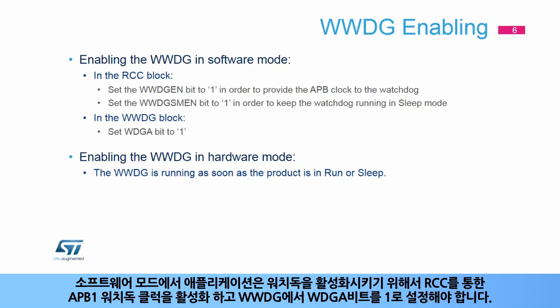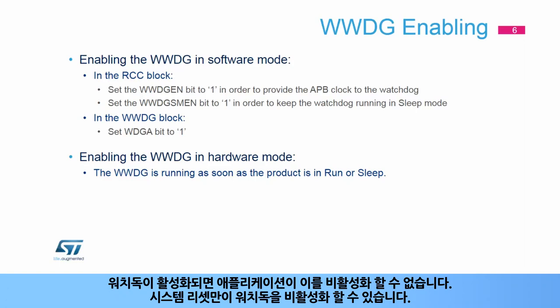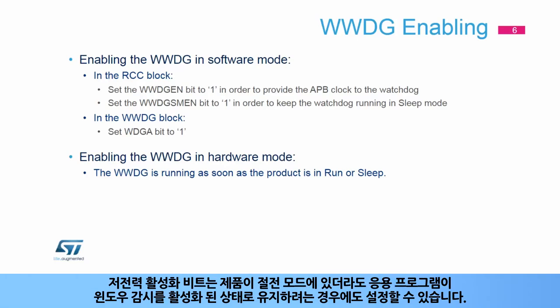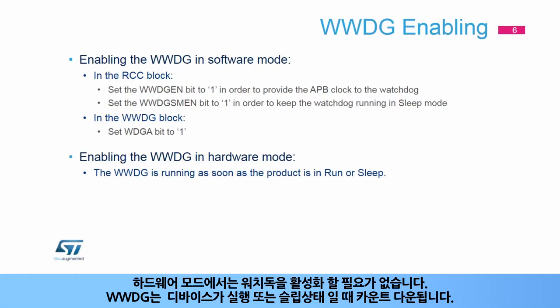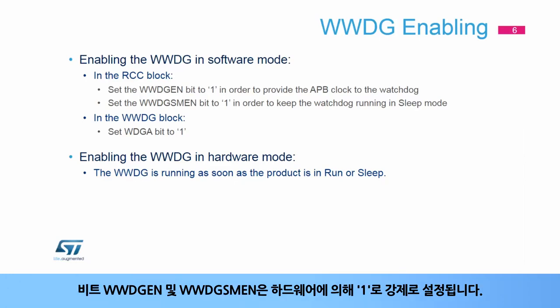The WWDG can work either in hardware or software mode. In software mode, the application needs to enable the APB1 watchdog clocks via the RCC and set bit WDGA to 1 in the WWDG in order to enable the watchdog. Note that once the watchdog is enabled, the application cannot disable it. Only a system reset can disable the watchdog clock. The low power enabled bit can be set as well if the application wishes to keep the window watchdog activated even in sleep mode. In hardware mode, there is no need to enable the watchdog. The WWDG counts down when the product is in run or sleep mode, and the bits WWDGEN and WWDGSMEN are forced to 1 by the hardware.